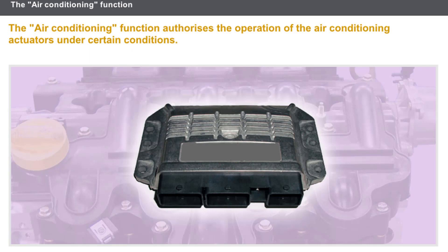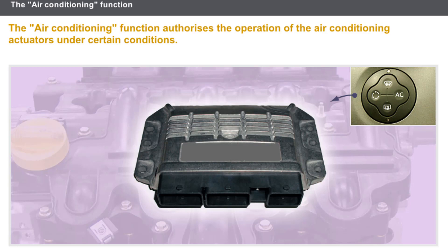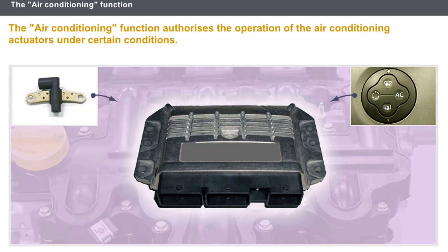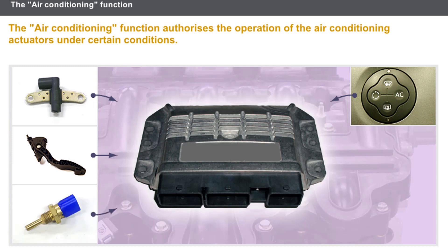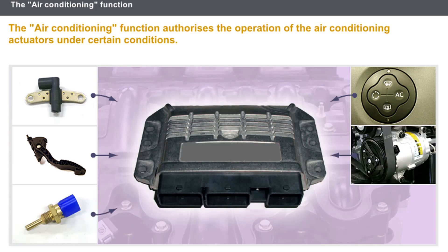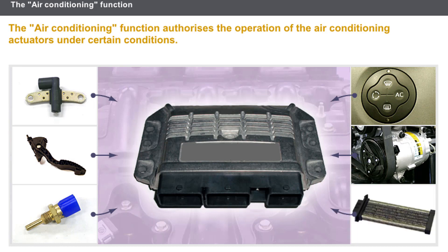The air conditioning function authorizes the operation of the air conditioning actuators under certain conditions. This function uses the following components: the air conditioning computer, the engine flywheel sensor, the full load signal sent by the accelerator pedal position sensor, the coolant temperature sensor, the air conditioning compressor clutch, and the heating resistors.